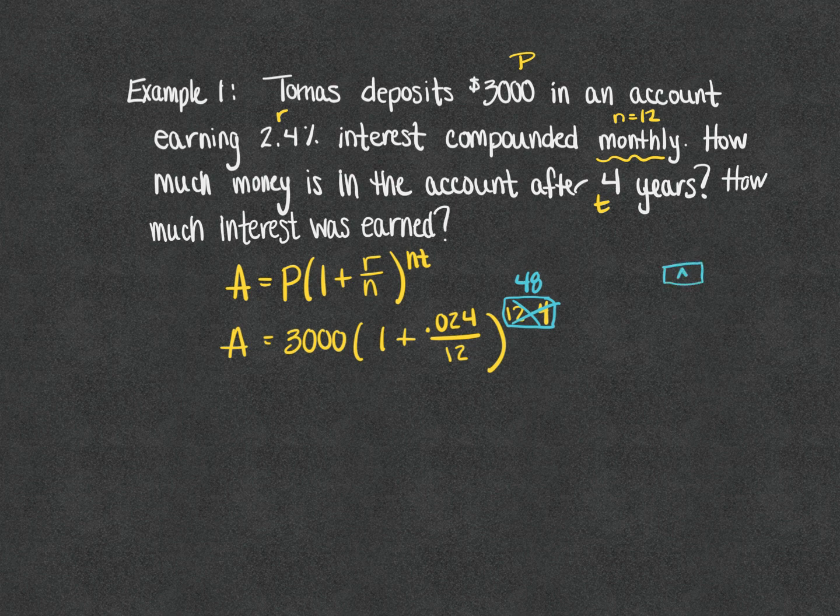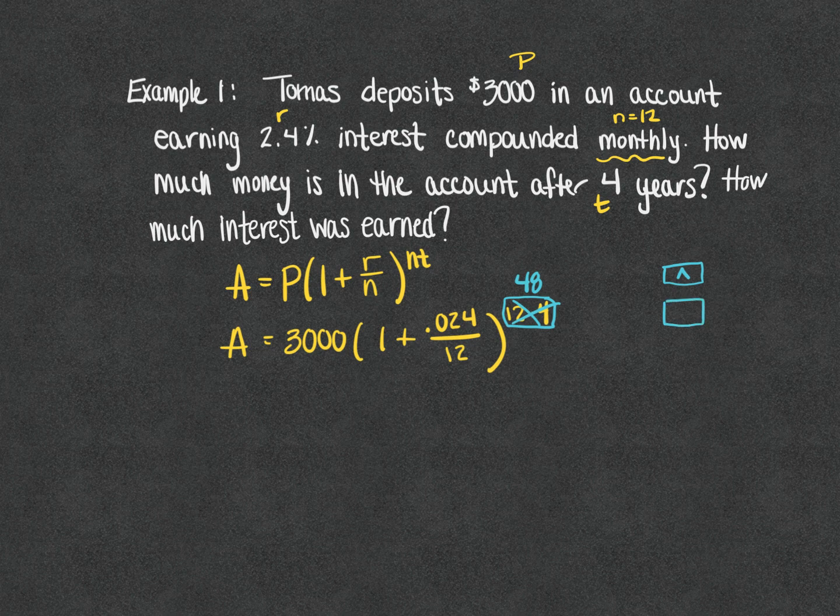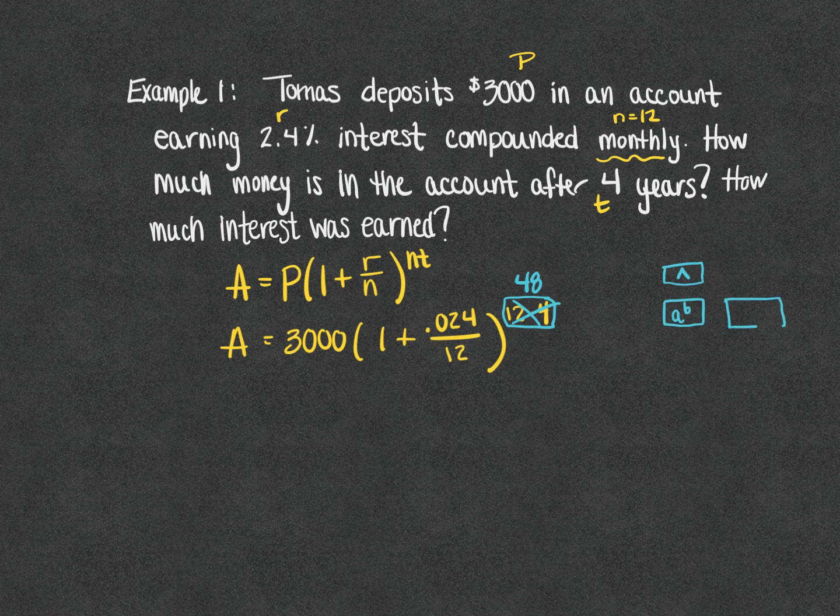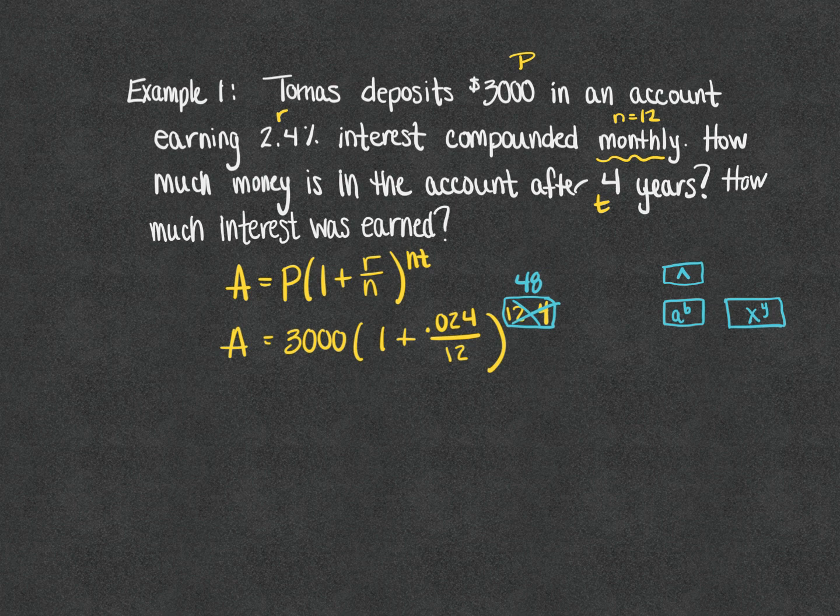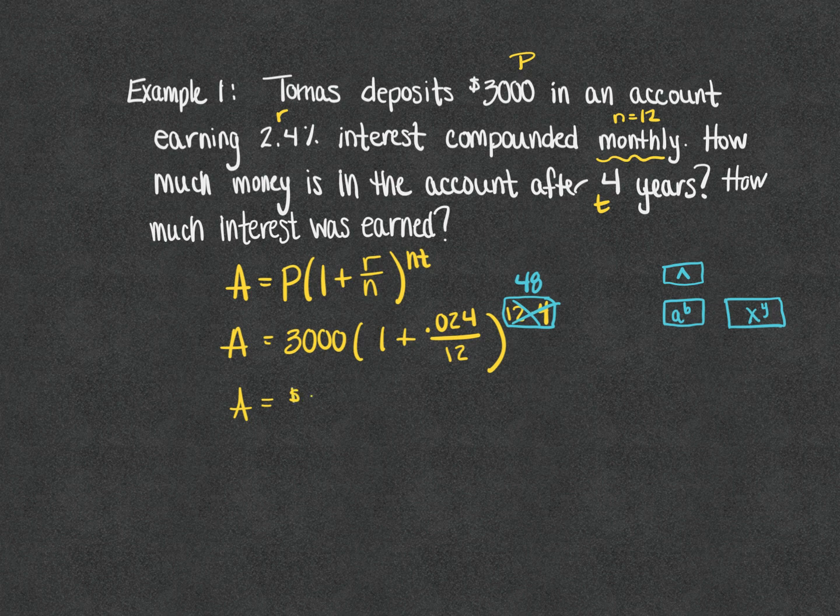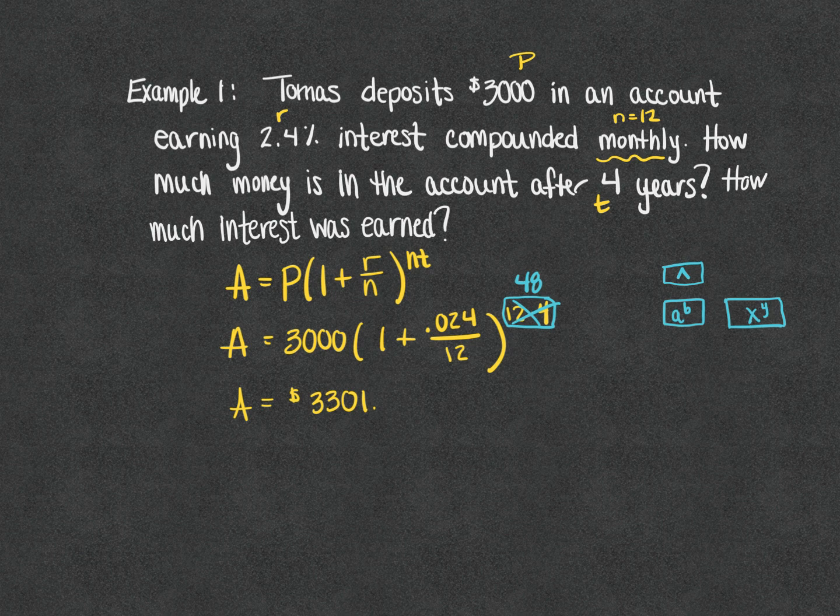Depending on your calculator you might see a key that has a little carrot on it, that's your exponent button. Occasionally you might see an a to the b or an x to the y, same kind of thing. When you get that all typed into your calculator we should find that the total amount of money in the account after four years is $3,301.96.